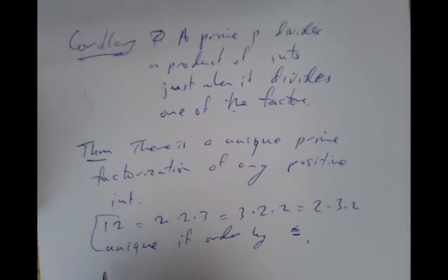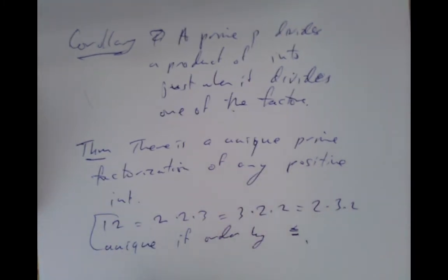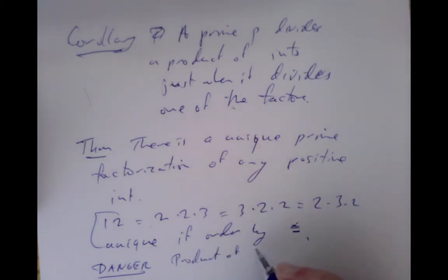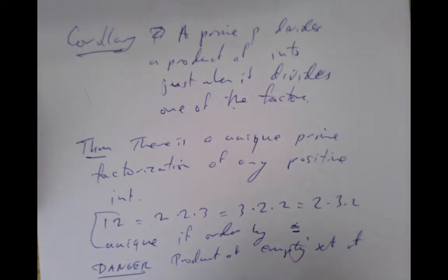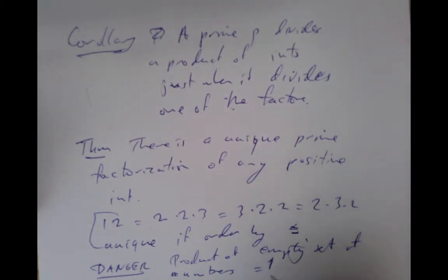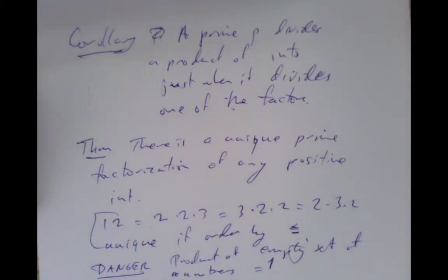There is also an issue about what if there aren't any prime factors at all. For example, 1 is a positive integer. The product of an empty set of numbers is always defined to be 1. So if you have no numbers at all and you multiply them all together, you get 1. It sounds strange, but it's a convenient definition that makes simpler statements for this sort of theorem.